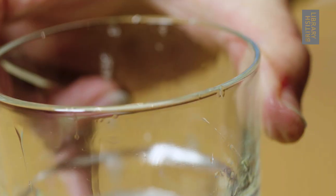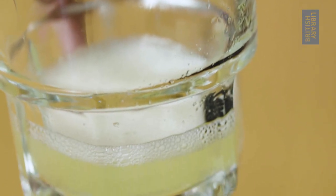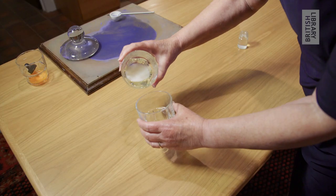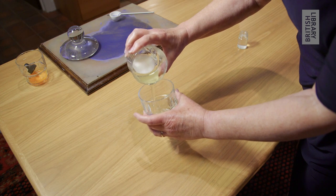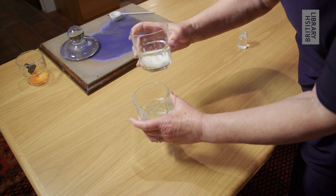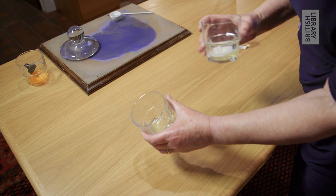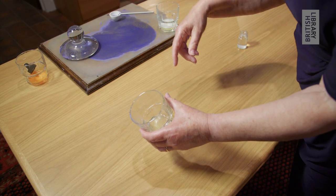So the egg is beaten to a light froth and then left for a while, and then the liquid underneath the froth is used, mixed with the pigment, and that makes it stick to the paper.